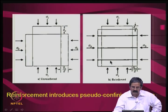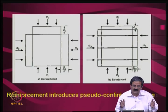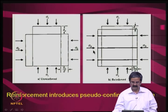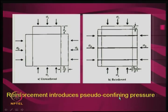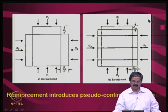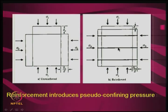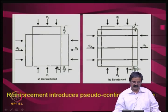This is the principle of reinforced soil — the reinforcement acts like applying extra confining pressure (pseudo-confining pressure) on the sides, so that whatever vertical force exists, there is a lateral force resisting it. Because of friction between soil and reinforcement, some sort of pseudo-confining pressure is introduced, which makes the system stable — unlike the unreinforced case where there is total collapse.